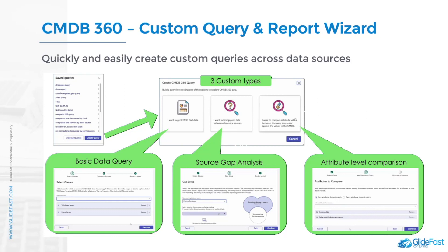The second type is the source gap analysis. This creates a query that you can use to analyze gaps in your reported CMDB 360 data. It queries one or more discovery sources that report a CI and one discovery source that doesn't report a CI.